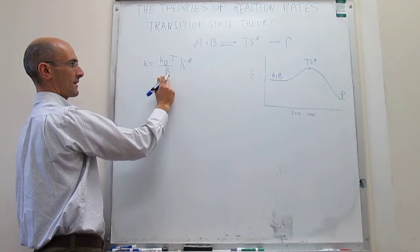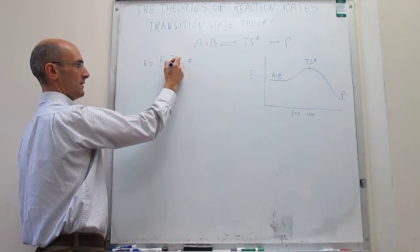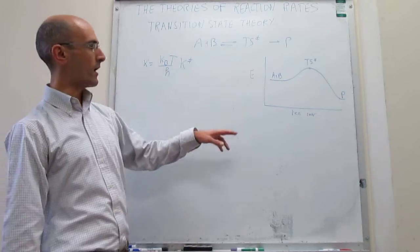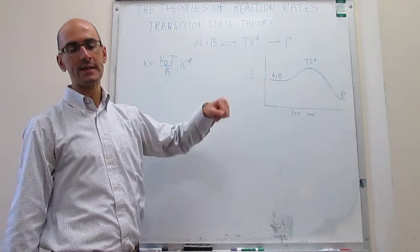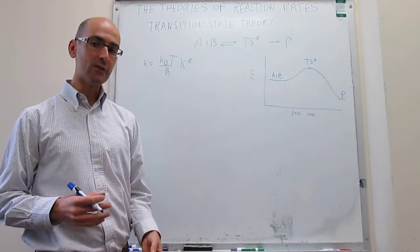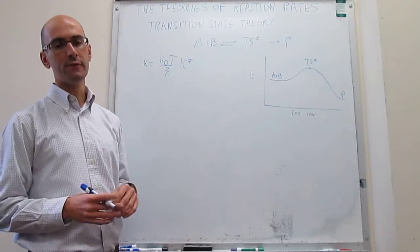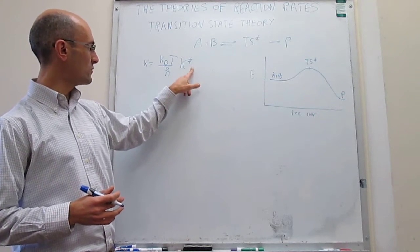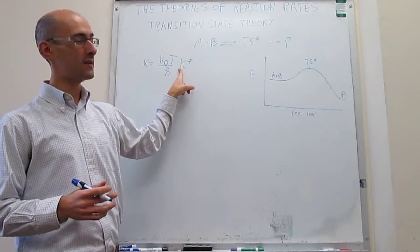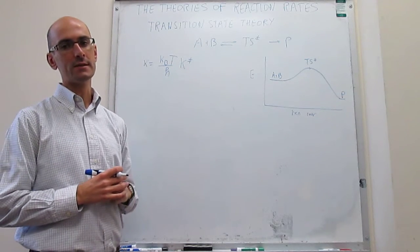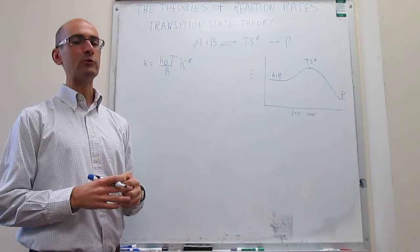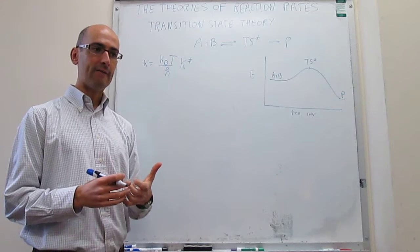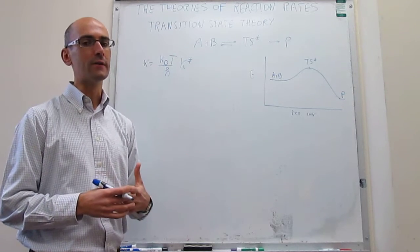That's the Boltzmann constant, that's the Planck constant, that is the temperature, and then we have that this will be the equilibrium constant that governs the equilibrium between reagents and the transition state. In this video, we actually take this concept a little further, and we're going to try to see how we can use thermodynamic arguments to learn more about that equilibrium constant, and in the end, be able to explain things like the pre-exponential factor and the activation energy that are part of the Arrhenius theory.